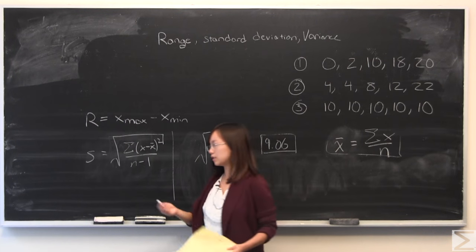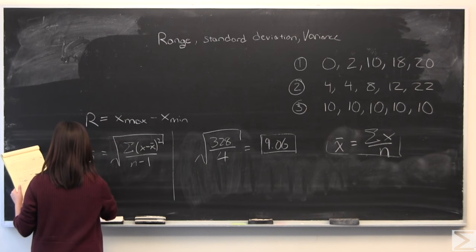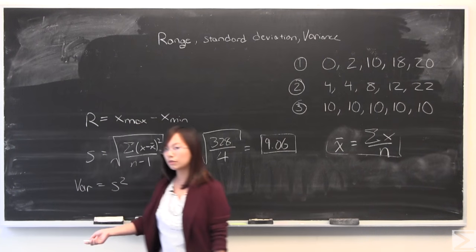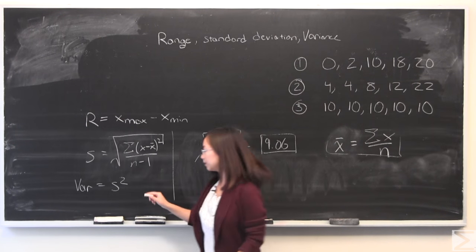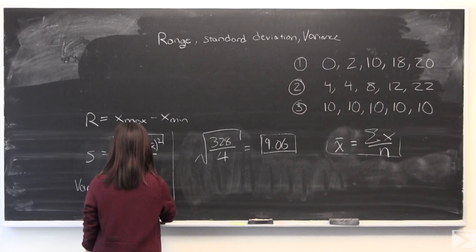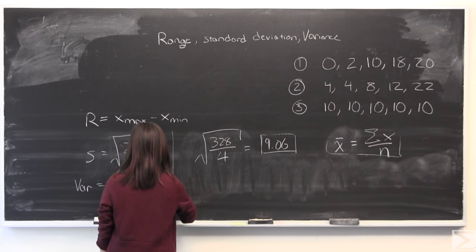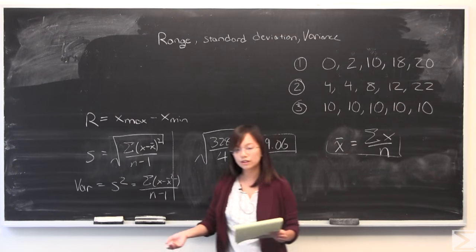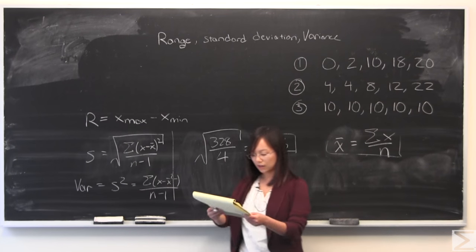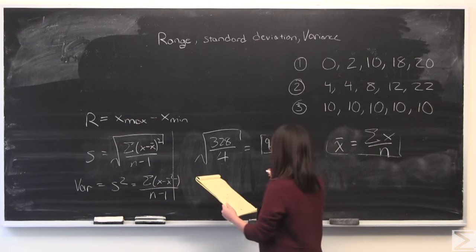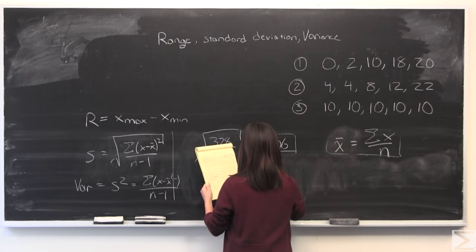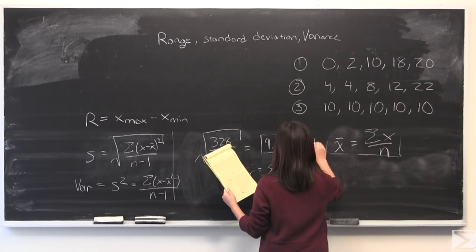Next is variance. Variance very simply is equal to s squared. So that would just be this squared, sum of (x minus x̄) squared divided by n minus 1. Both of these are very useful. They're less sensitive to outliers. That would make the variance for this equal to 82.